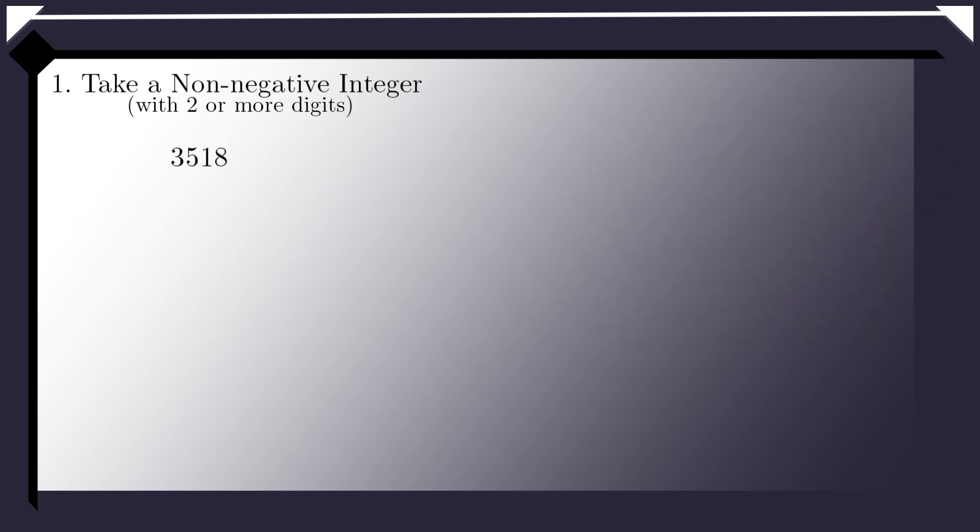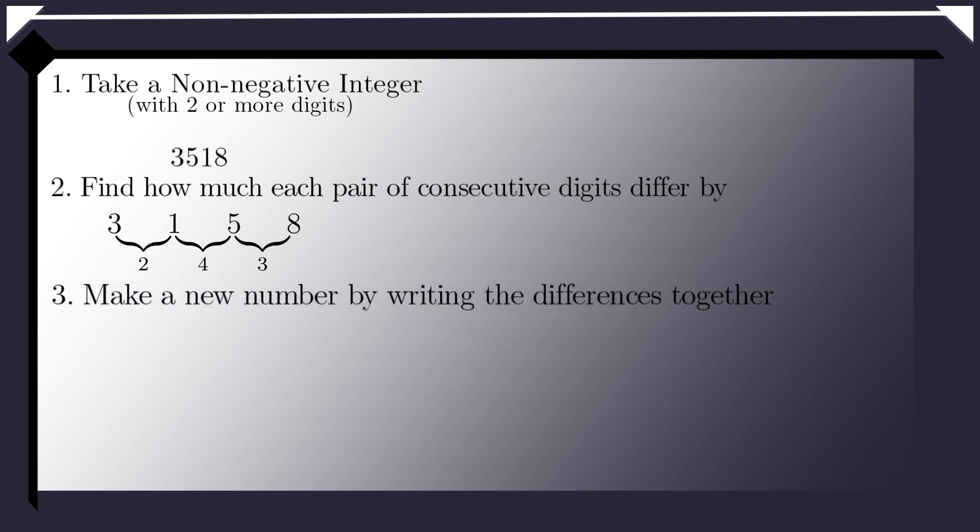Let's do something else instead. Starting from the first digit, 3, we can find how much each pair of consecutive digits differ from each other. So, 3 differs from 1 by 2, 1 differs from 5 by 4, and 5 differs from 8 by 3. We write these differences together to form a new number, 243.